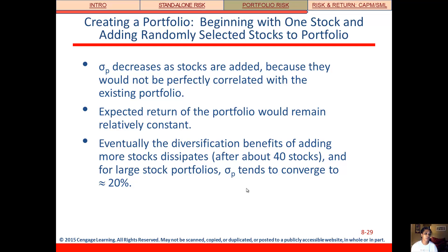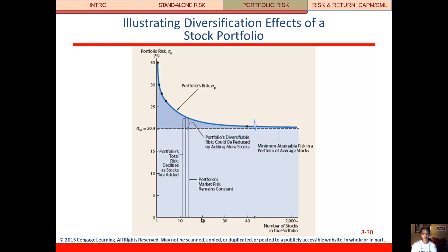If we create a portfolio with one stock and then randomly add other stocks, the portfolio standard deviation is going to go down as stocks are added because they're not perfectly correlated with each other. The expected return of the portfolio probably wouldn't change too much, so diversification affects your risk more than your return. But after about 40 stocks, the riskiness of the portfolio really doesn't change much — it gets to about 20%, down significantly from 35% for one stock, and adding more won't make a difference. That's what's shown in this graph.